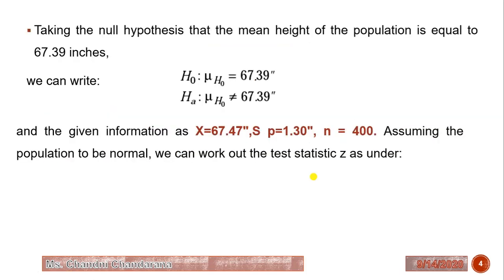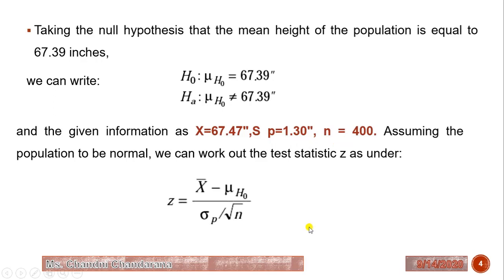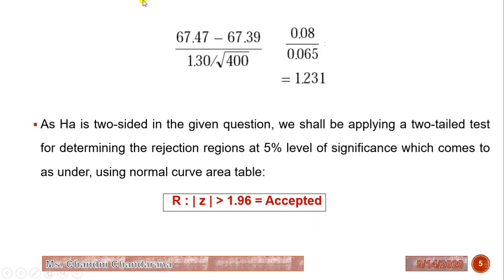We can apply the first formula here. The null hypothesis is that the population mean equals 67.39, and the alternative hypothesis is that it is not equal to 67.39 (two-sided). Given: sample mean is 67.47, population standard deviation is 1.30, and sample size is 400. Applying the first formula, with 67.47 as the sample mean, 67.39 as the hypothesized mean, 1.30 as the standard deviation, and 400 as the sample size, we get a Z value of 1.231.